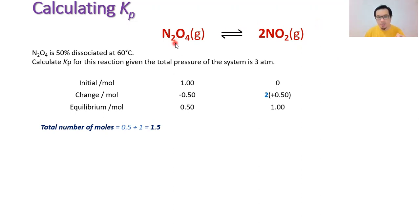Usually for Kp calculations we are dealing with substances which exist in the gaseous state, as you can see in this particular reaction. We have dinitrogen tetroxide converting to nitrogen dioxide. The question states that N2O4 is 50% dissociated at a constant temperature of 60 degrees Celsius. We want to calculate Kp for this reaction given the total pressure of the system is 3 atm.